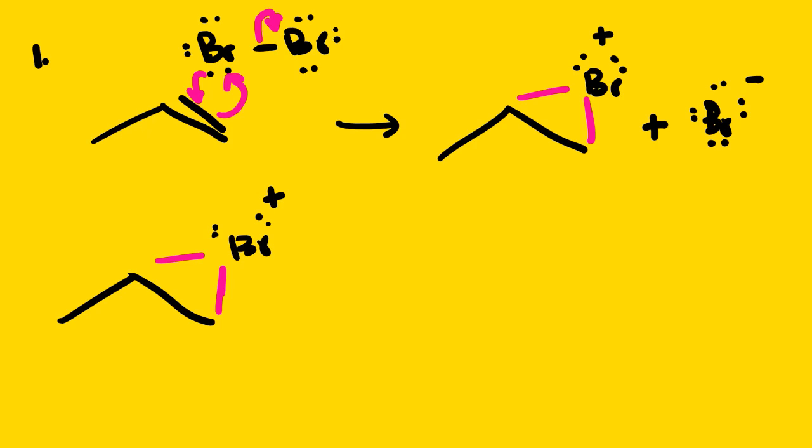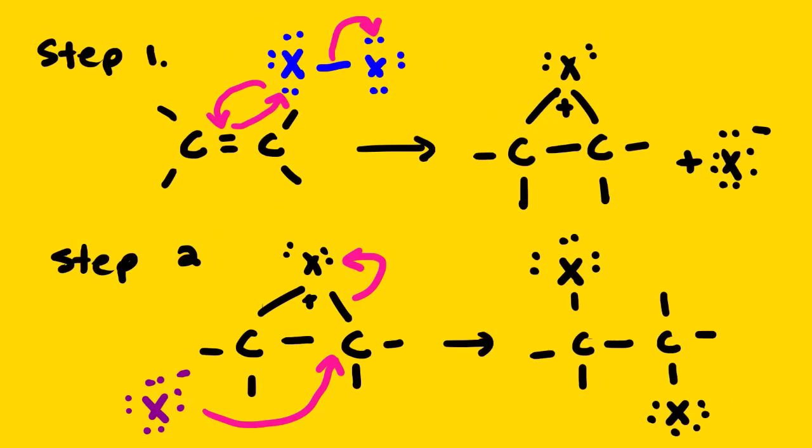Before we continue, I want us to make something clear here. Let us look at the movement of electrons. So we have electrons moving from this, from this double bond, this double bond.